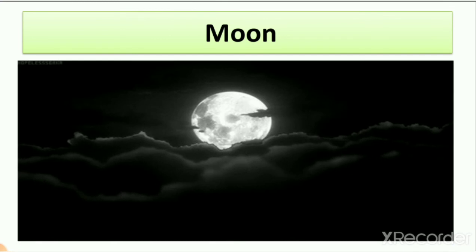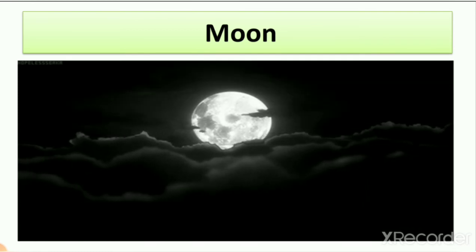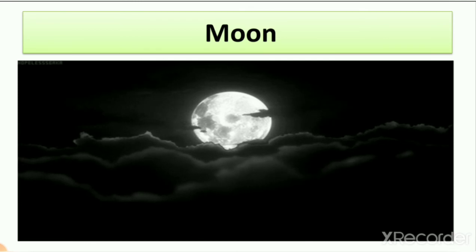Our next hard word is 'moon,' spelled M-O-O-N. What is the moon? The moon is a big white ball. Here you can see the picture of the moon. You all see the moon in the sky at night. It is easy for you to understand.